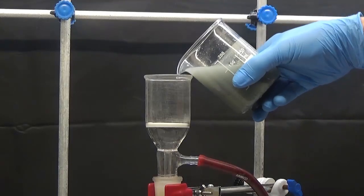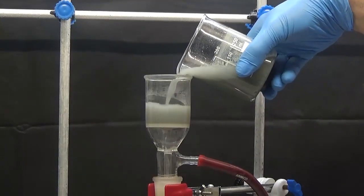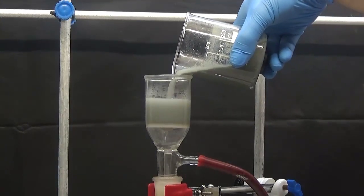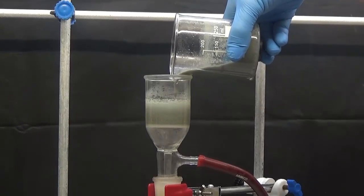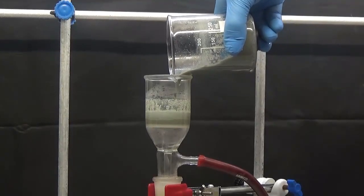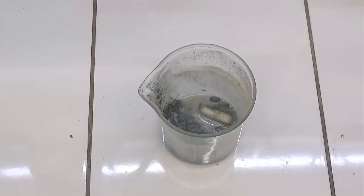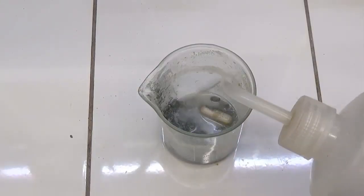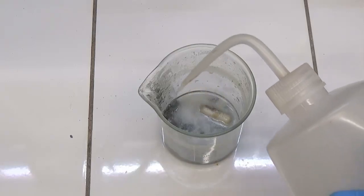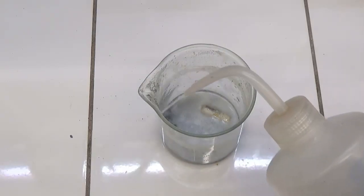Once all zinc has been added, filter to remove the unreacted zinc and thoroughly wash the residue in the funnel twice with cold water. The yield depends on the zinc washing that did not react, as furfurylamine hydrochloride is trapped in the pores.